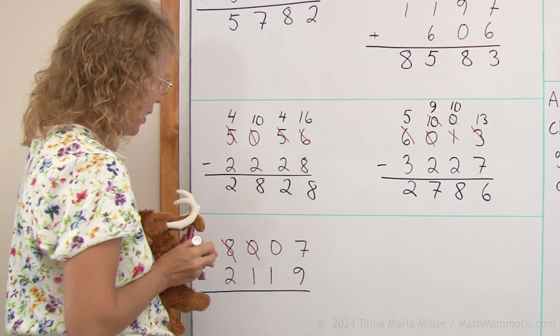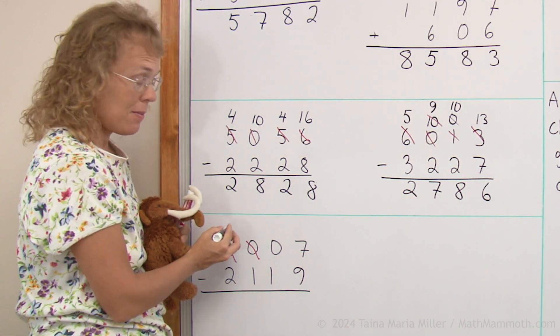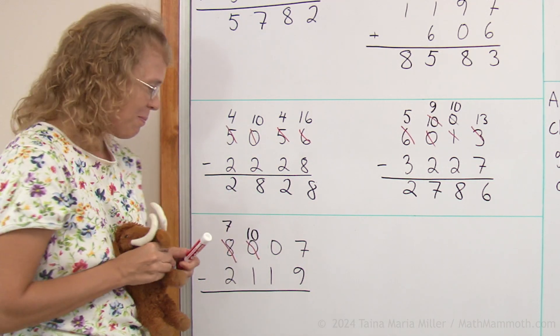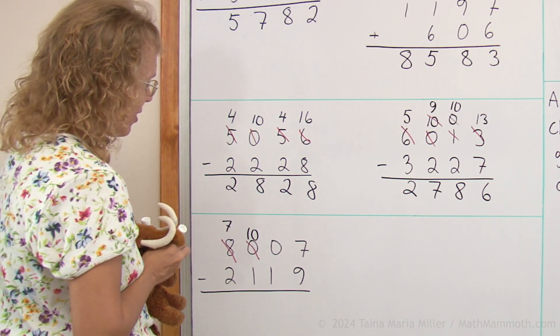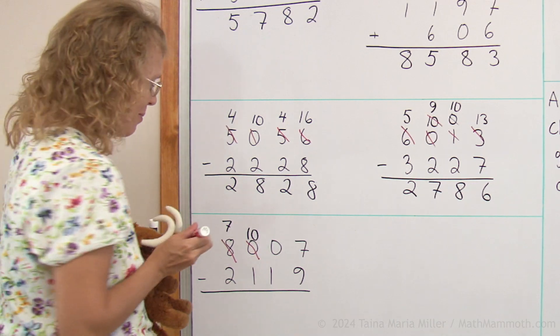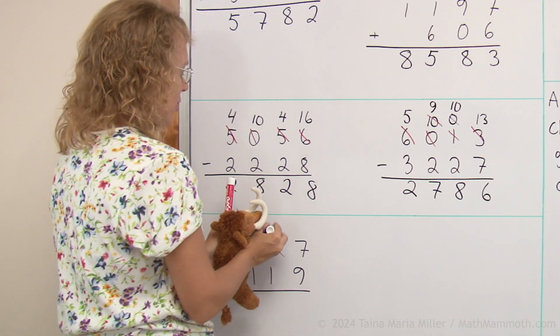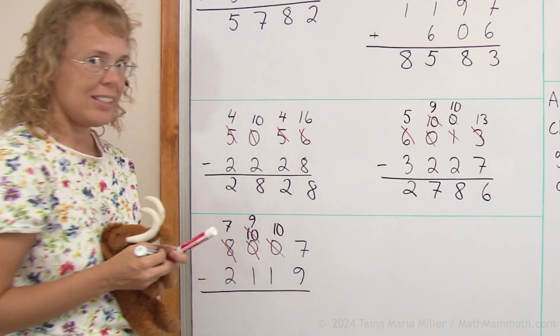So what do we get? Over here, seven thousand. Over here, ten hundreds. But it doesn't stop there. Now we need to take one of the hundreds. Cross that out. Leaving nine hundreds and ten tens.